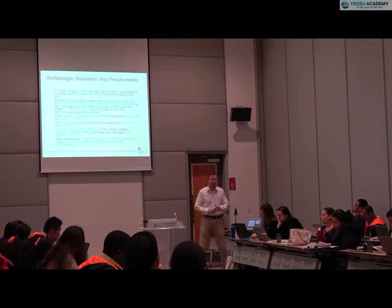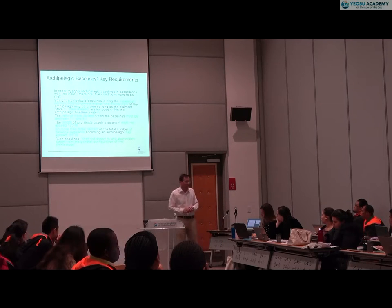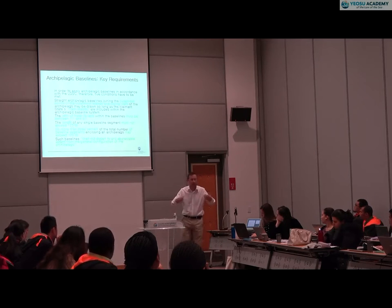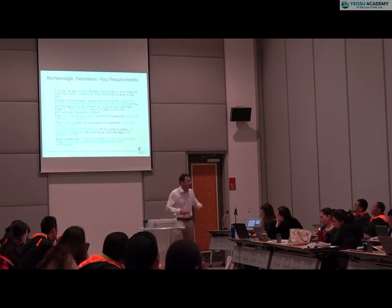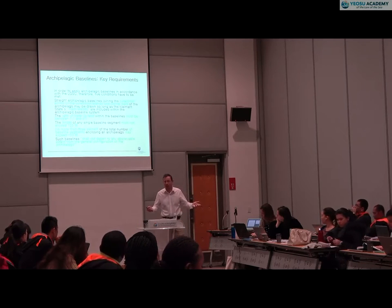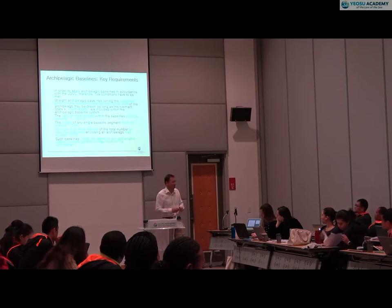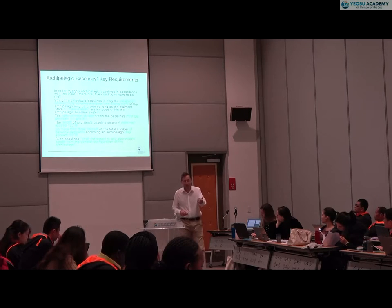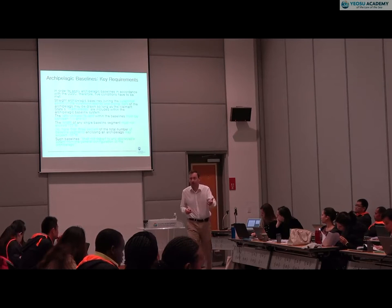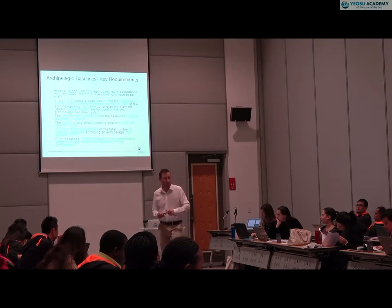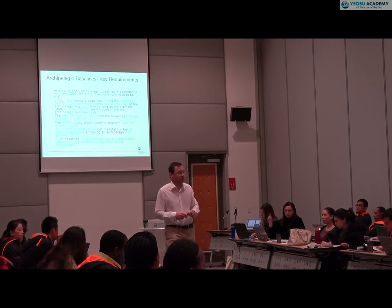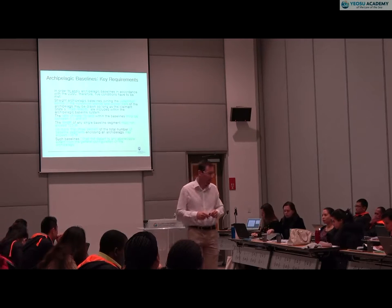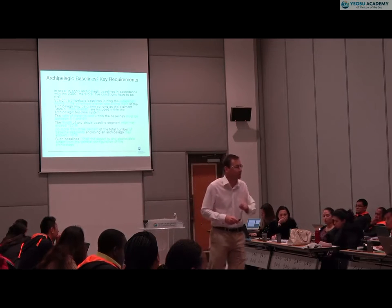There is the test. I like the provisions of the convention where you do have a mathematical objective test. For example, Article 7 on straight baselines has ambiguous language open to interpretation — 'fringe of islands.' A UN expert report on interpretation of Article 7 very helpfully says that for there to be a fringe of islands, you need more than one. Whereas here, for archipelagic baselines, you need to fulfill the ratio test.